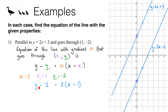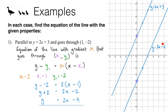Substituting in, I get y minus negative 2 equals 2 times (x minus 1). Expanding the right hand side gives 2x minus 2. The left hand side simplifies — y minus negative 2 is the same as y plus 2. Finally, making y the subject, I subtract 2 from both sides to get y equals 2x minus 4. So the equation of the line parallel to y equals 2x plus 3 is y equals 2x minus 4, which matches what we found before.